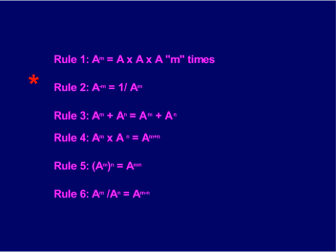Rule number two, a to the negative m equals one over a to the m. Anytime you have a negative exponent, that means there's an exponent in the denominator. And commonly, if you see an exponent in the denominator, it's illustrated with a negative exponent.